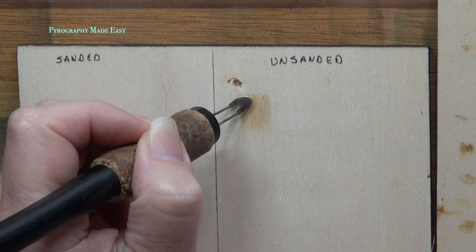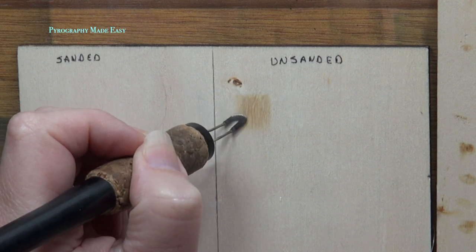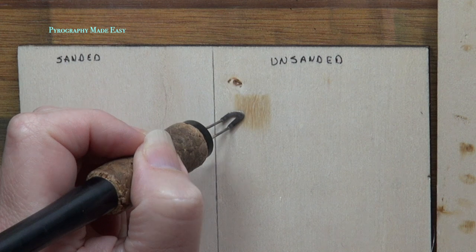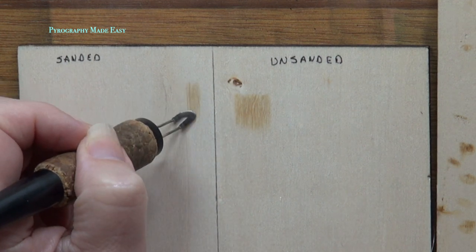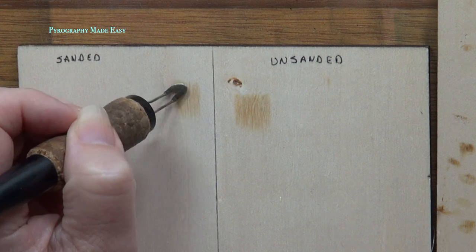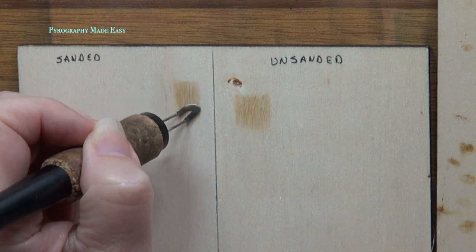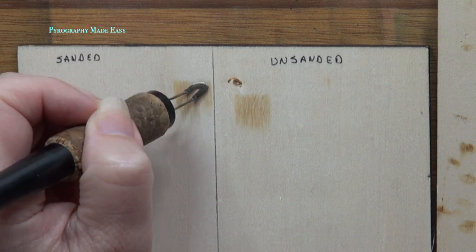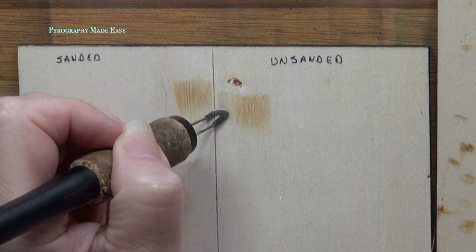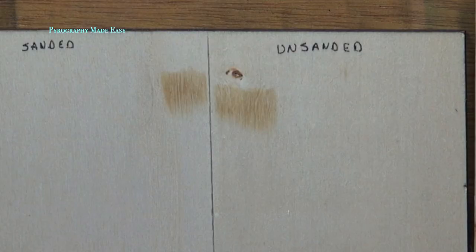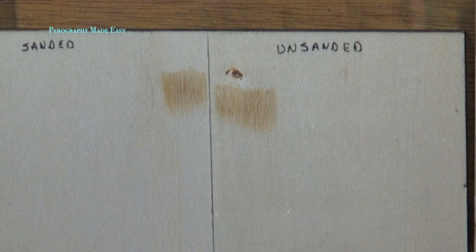That makes it much harder to keep consistent pressure as I burn. The sanded side, on the other hand, is much easier to burn on. The pen tip can glide over the surface and is not encountering much if any resistance. I am getting much smoother burn results. Here are the two burns. I know they look pretty similar but the one created on the left, which is the sanded side of the board, was so much easier to do.